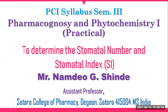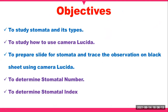This is a Pharmacognosy practical titled 'Determine the Stomatal Number and Stomatal Index.' The objectives are: to study stomata and its types, to study how to use camera lucida, to prepare a slide for stomata, and to trace the observation on a blank sheet using camera lucida.